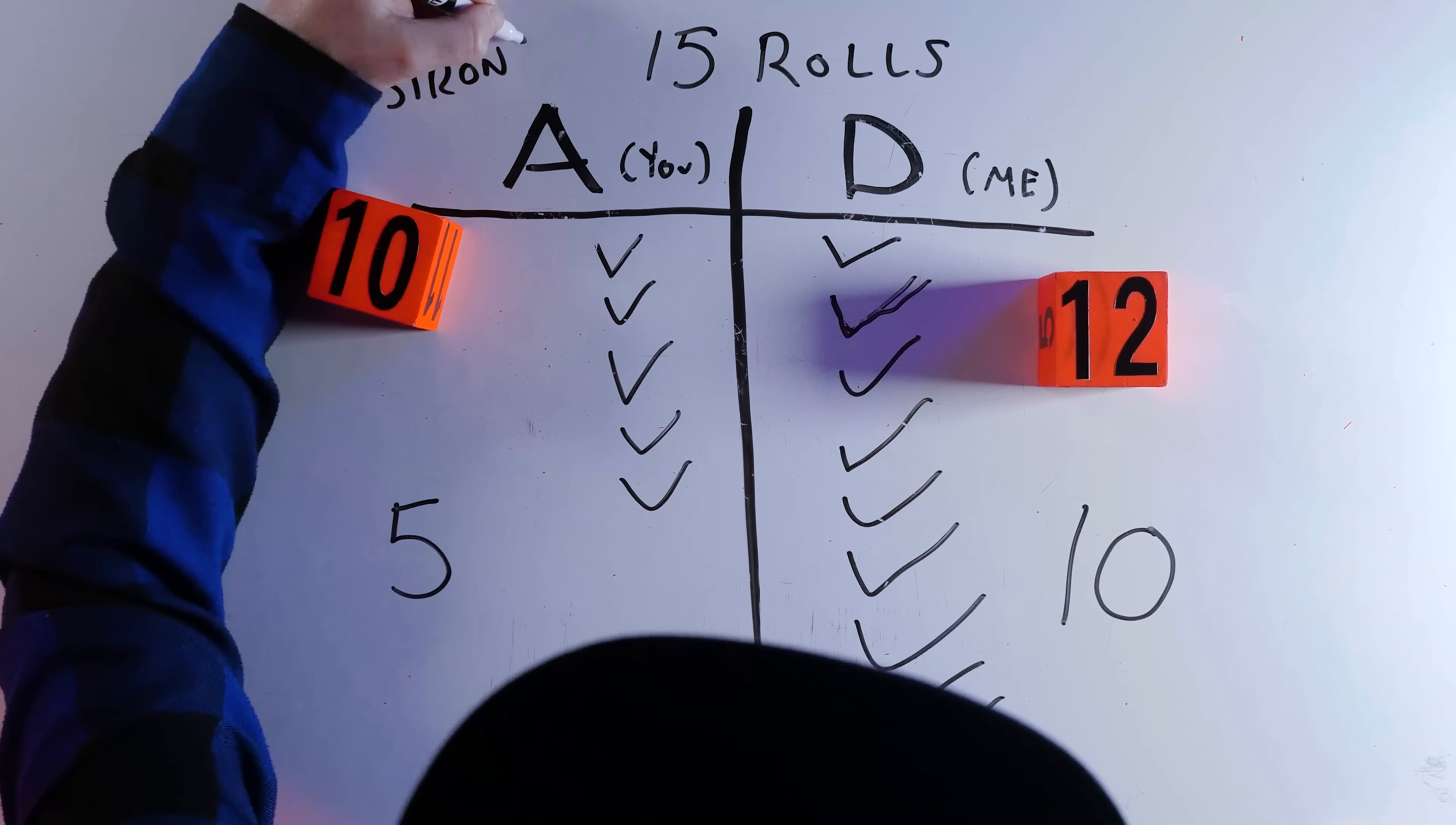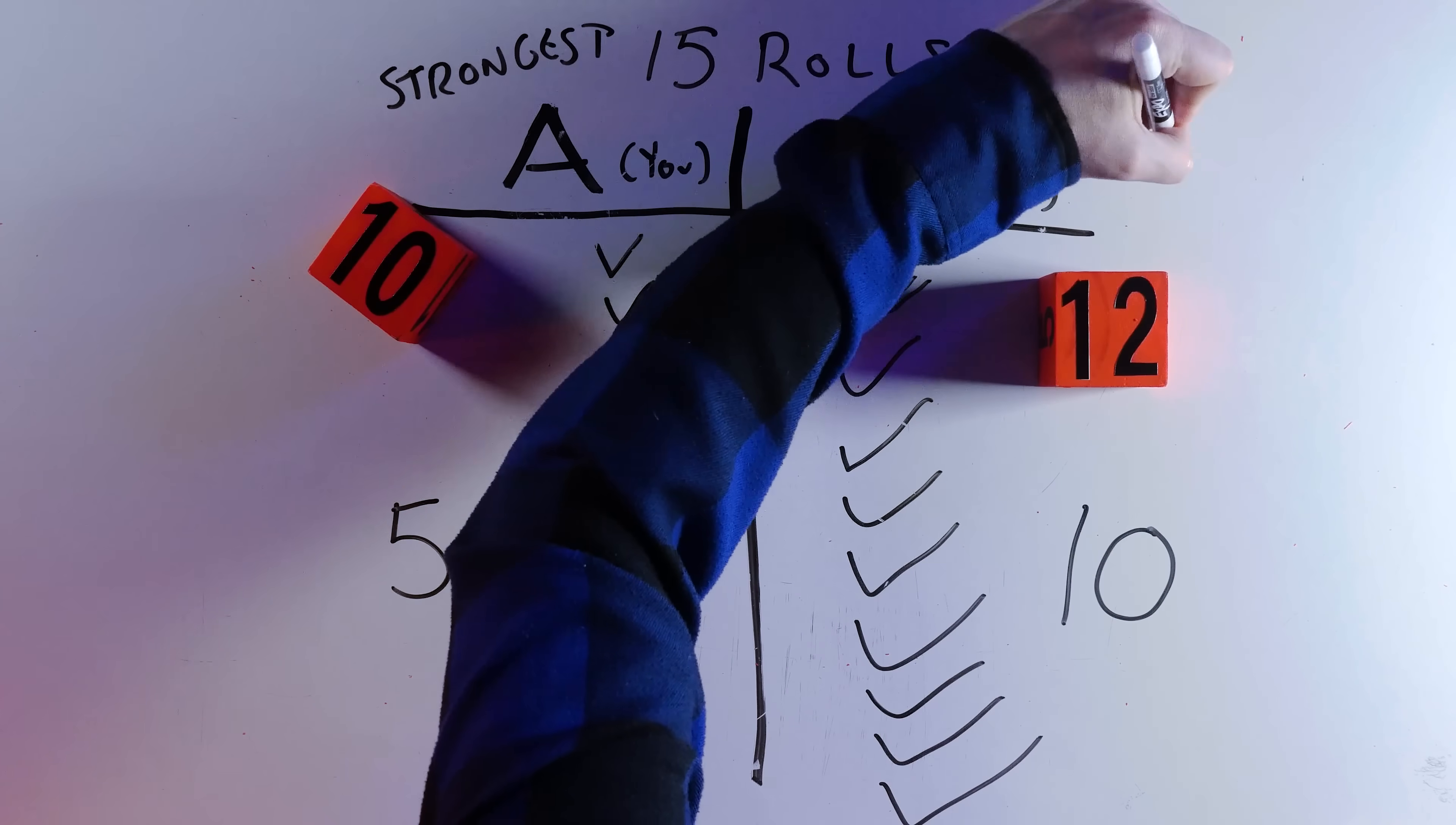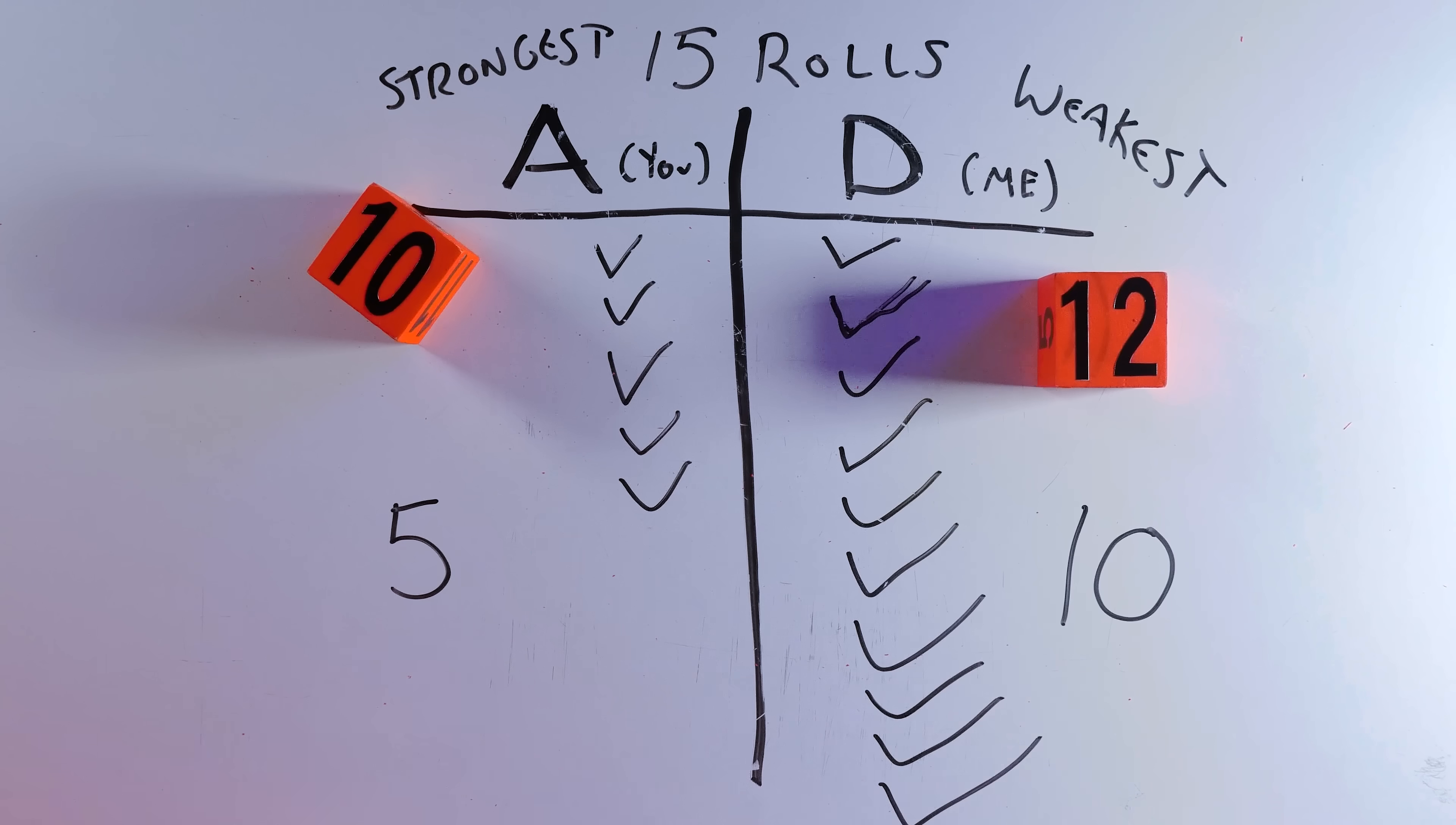So despite D seeming to be the weakest and A being the strongest, out of 15 rolls, D won exactly twice as many times as A. D is somehow stronger than A.